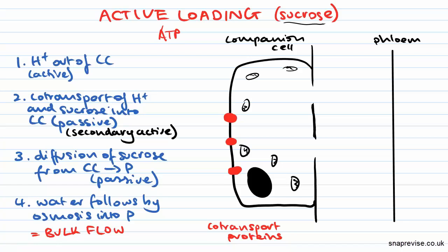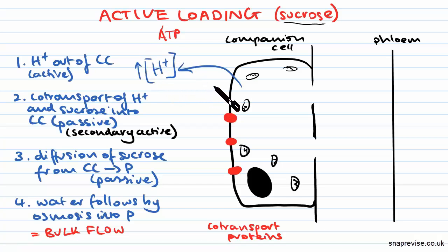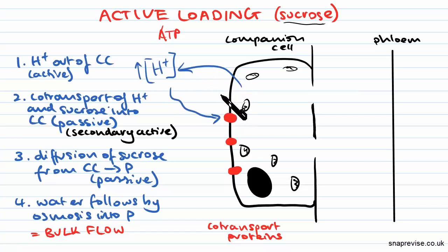The first thing that happens in active loading is that hydrogen ions, or H+ ions, are pumped out of the companion cell. This builds up the concentration of hydrogen ions on that side of the companion cells. This means they will diffuse back in, but because membranes are generally impermeable to H+ ions, the only way they can get through is through special proteins.